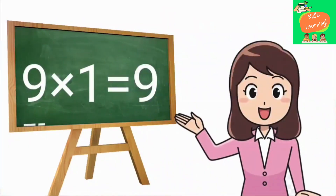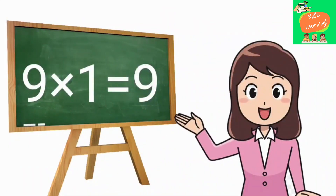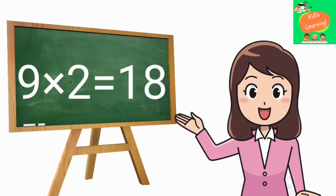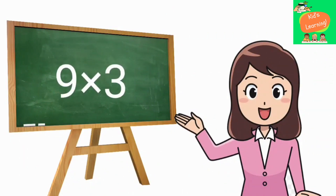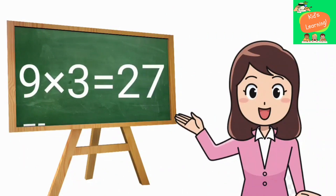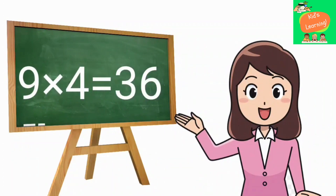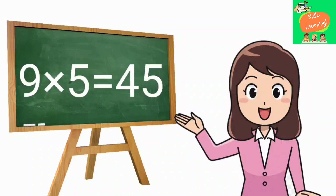9 1's are 9, 9 2's are 18, 9 3's are 27, 9 4's are 36, 9 5's are 45.